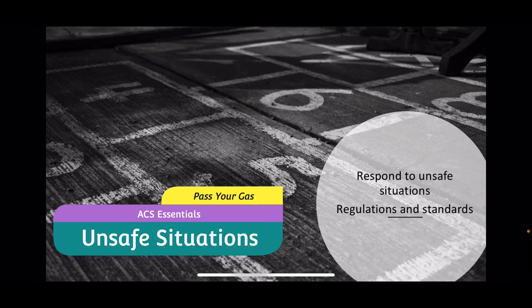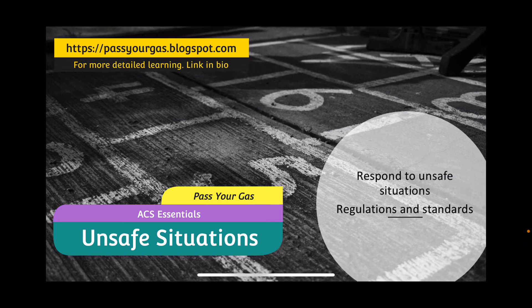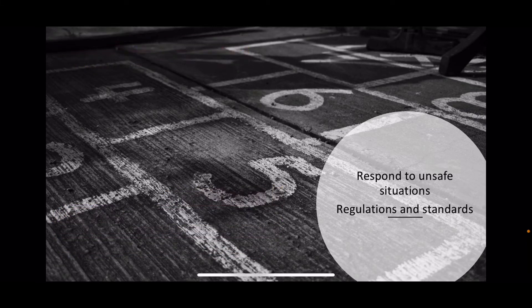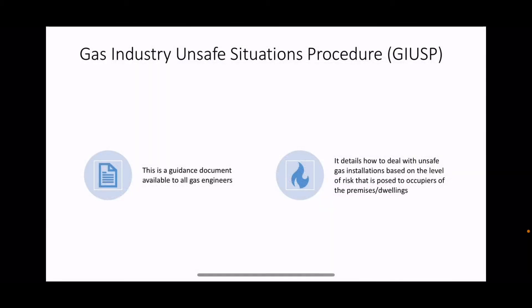This presentation is about unsafe situations, regulations and standards. You are expected to know all of these in both your assessment and your exams. The Gas Industry Unsafe Situations Procedure, the GIUSP, is a guidance document you get issued with, or you can buy it when you become a gas safe engineer. Your gas school should provide you with some so that you can see them.